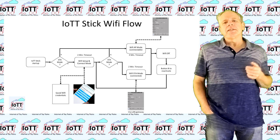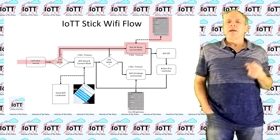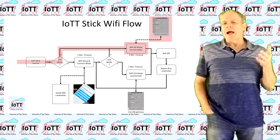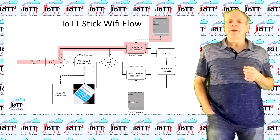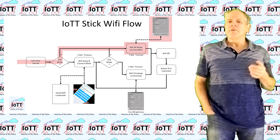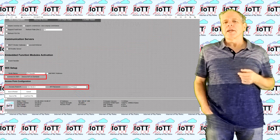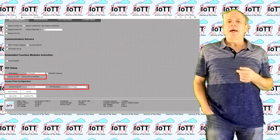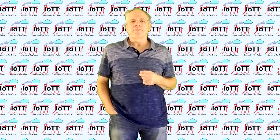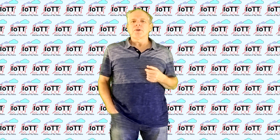If the stick is in AP mode, meaning it is providing an access point on its own, it is straightforward. The stick starts up, initializes the access point, and it is ready. You can then use any Wi-Fi device to connect to it and load the web pages. If you want to make changes, you can load the stick configuration page, change the IP address of the access point, or switch it back to station mode.